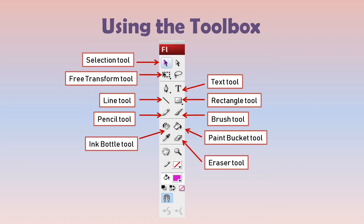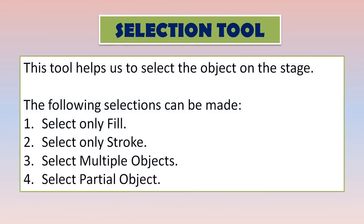Now the type of tool we are going to discuss today is the selection tool. As the name itself suggests, this tool helps us to select an object on the stage. If you have created any object on the stage in your Flash window — for example, a rectangle — and you want to select it, you will use the selection tool. Now selections can be made in 4 different types.